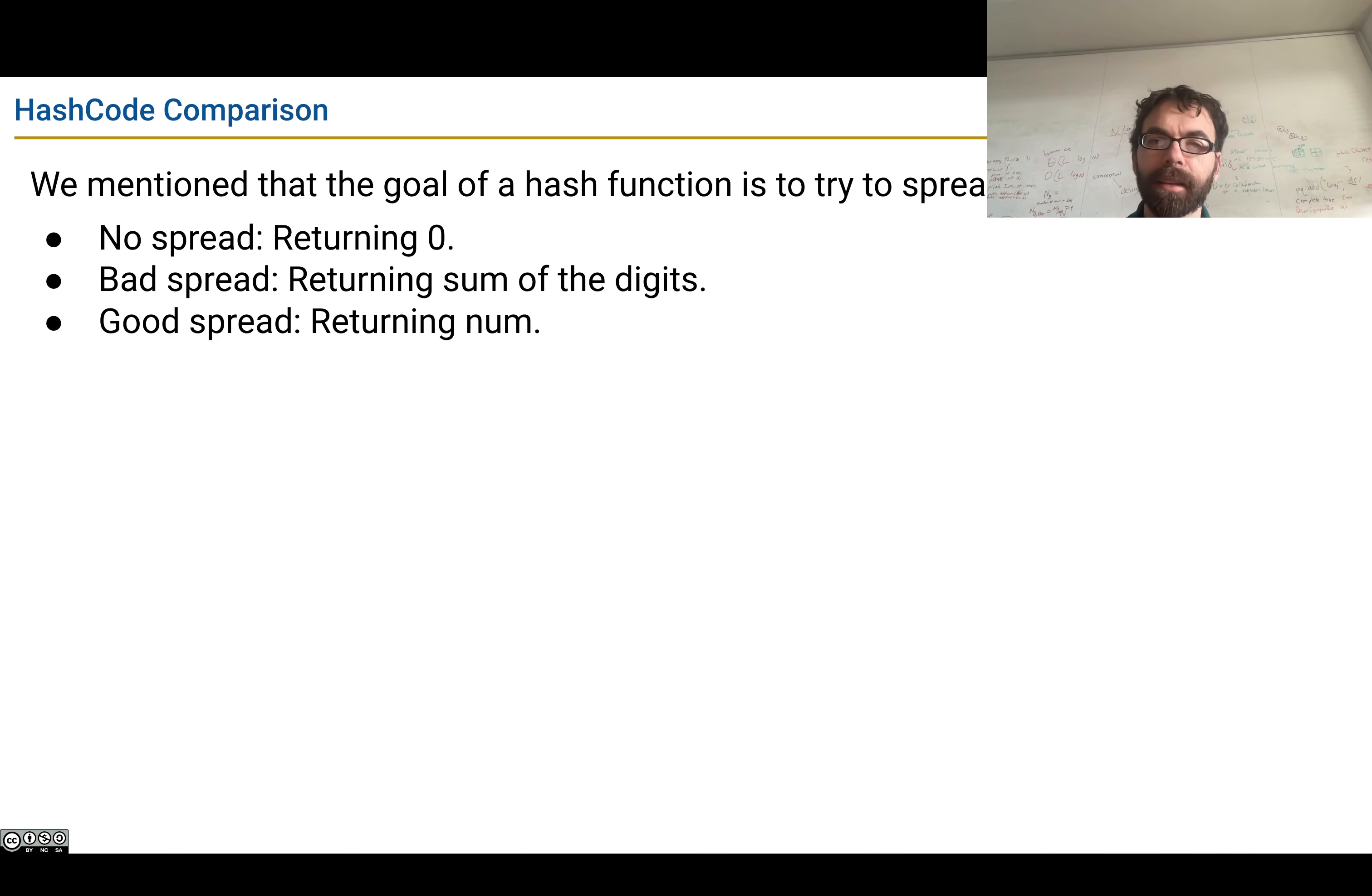A bad example would be a hash function like returning the sum of the digits or the leading digit, like we just saw. That would be bad spread because you get a lot of clustering. Typical data is going to end up occupying only a relatively small number of the buckets.